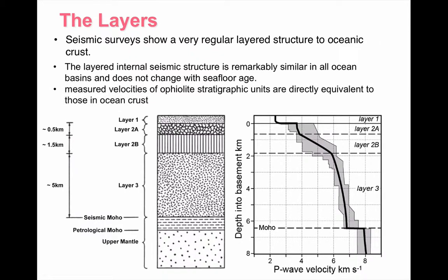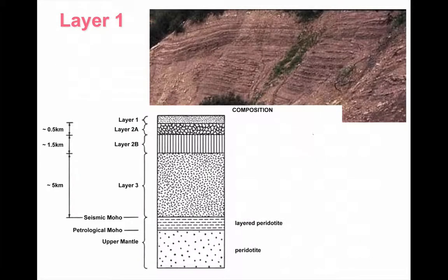Crucially, these velocity measurements that we get from the different layers are equivalent to what we find in the ophiolites. So we can match the composition of rocks from the ophiolite sequences with the seismic evidence to show us which layers they can be found in. Let's have a look at these layers.